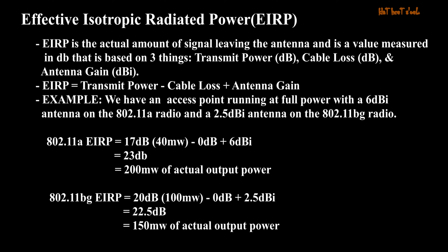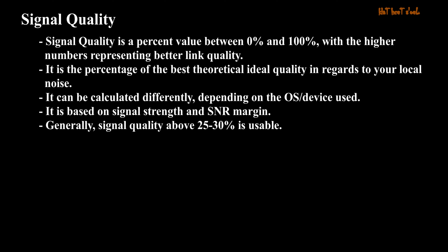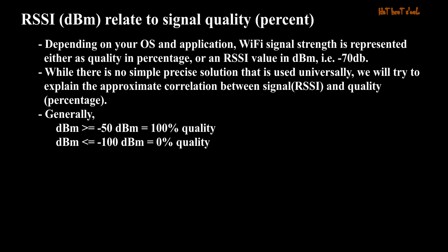Signal Quality is a percent value between 0% and 100%, with higher numbers representing better link quality. It is the percentage of the best theoretical ideal quality in regards to your local noise. It can be calculated differently depending on the operating system or device used, and is based on signal strength and SNR Margin. Generally, signal quality above 25 to 30% is usable.